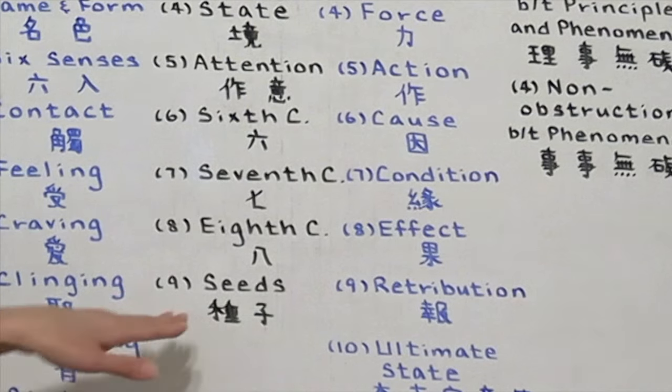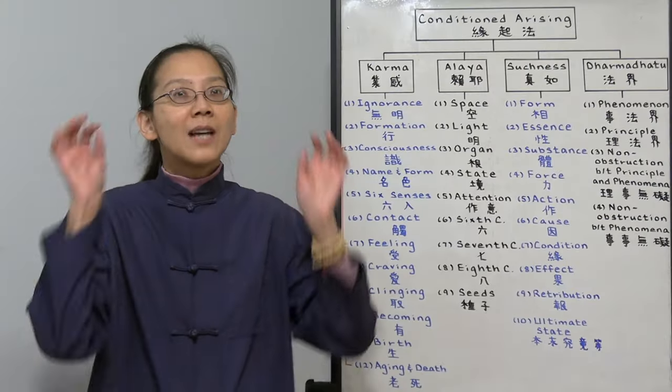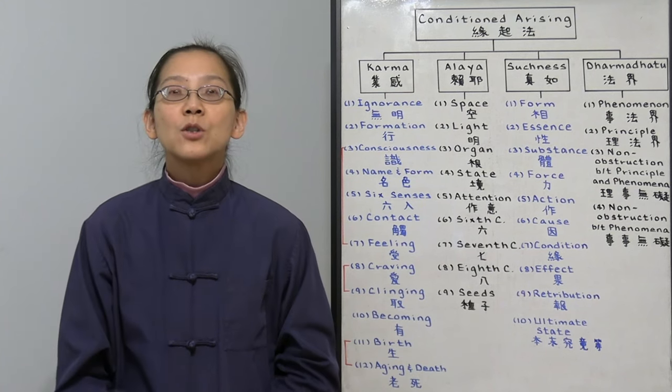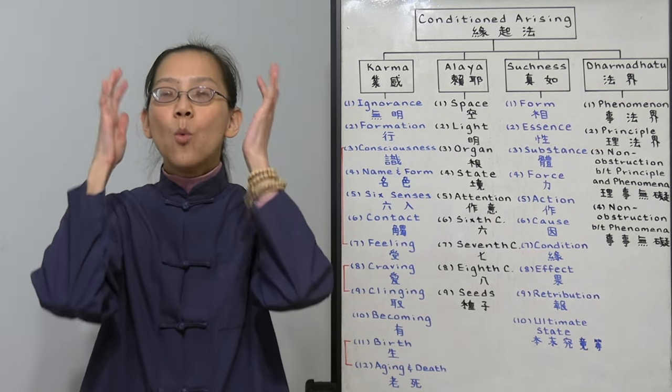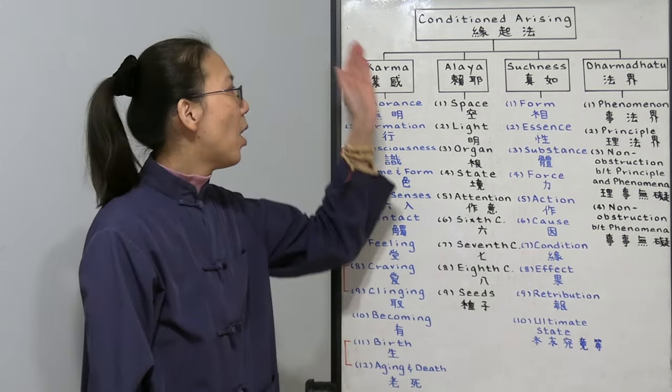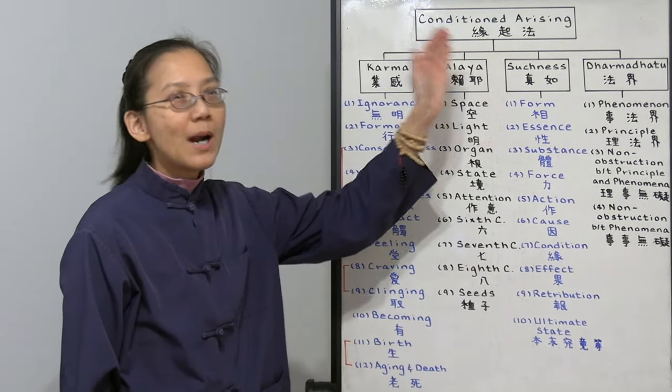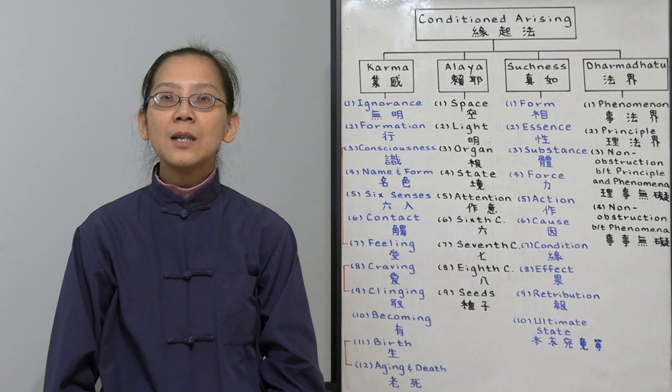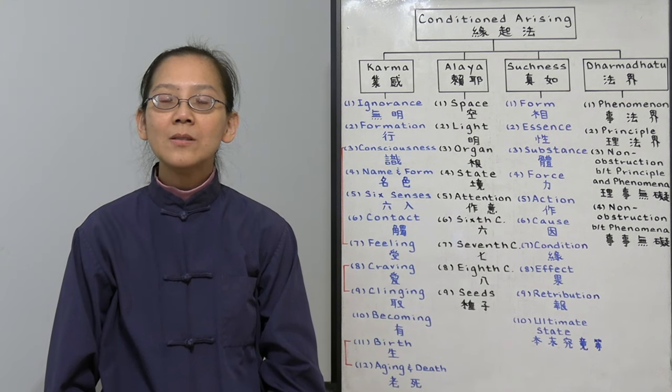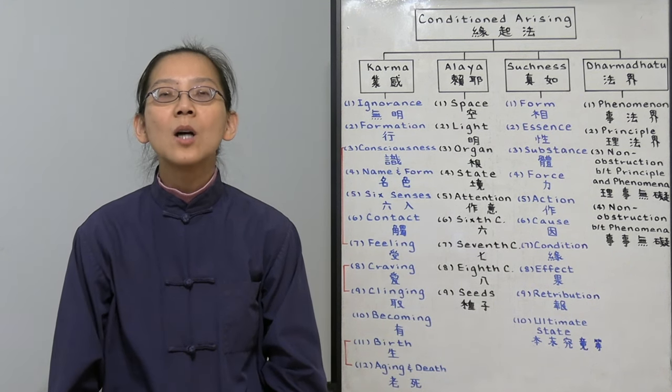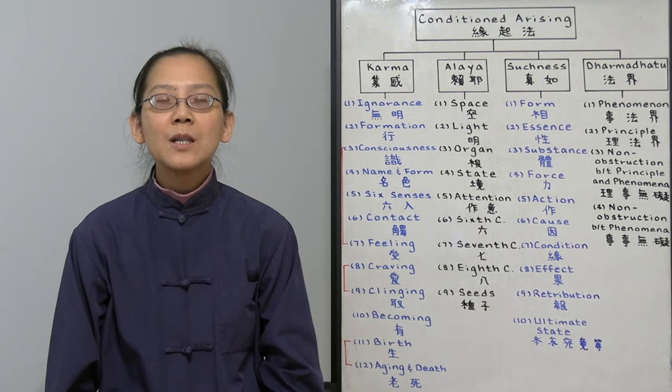Then we also need the seed of the eye consciousness. So just to be able to see one thing, you need all nine conditions arising. So you tell me what you see, is it real? Nothing is real. It's all a perception of your eyes.